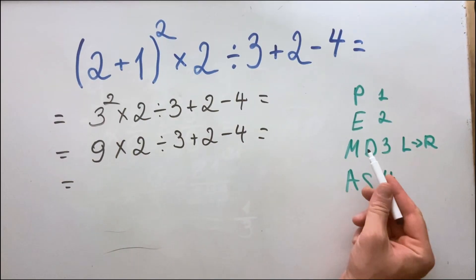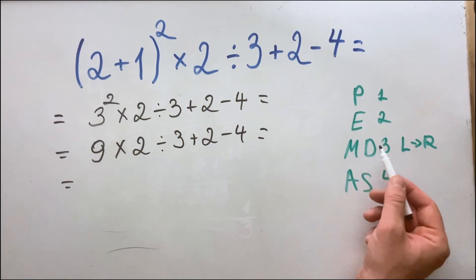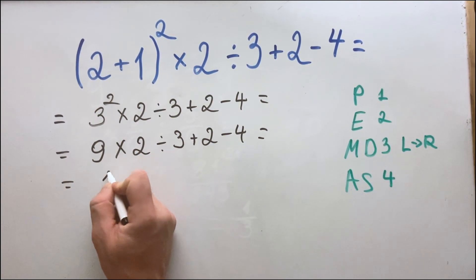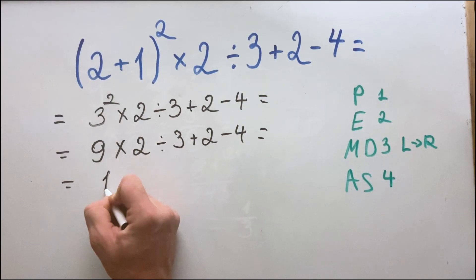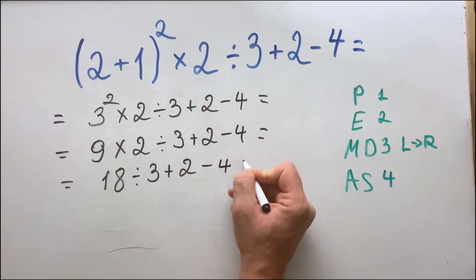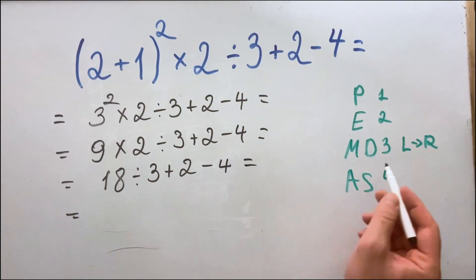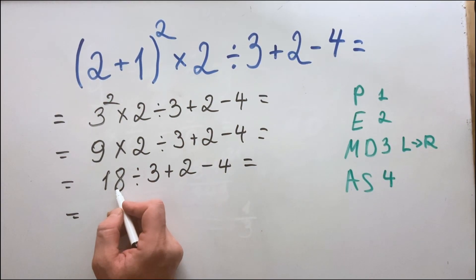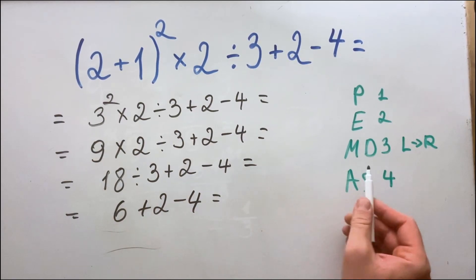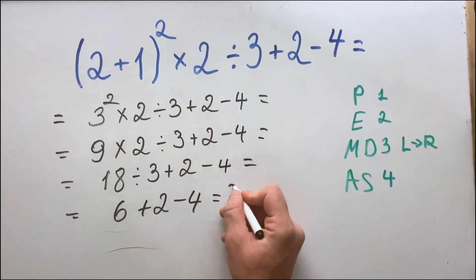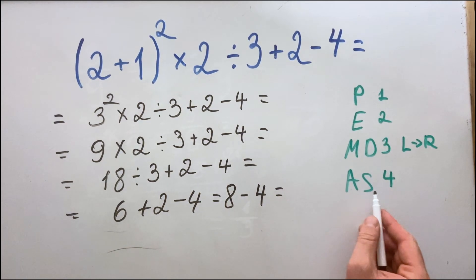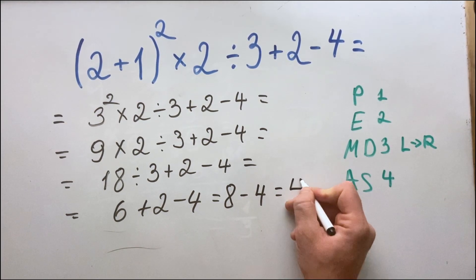Now we do multiplication first, then division. Nine multiplied by two is 18. Then 18 divided by three equals six. So we have six plus two minus four. Next, addition: six plus two is eight. Finally, subtraction: eight minus four is four.